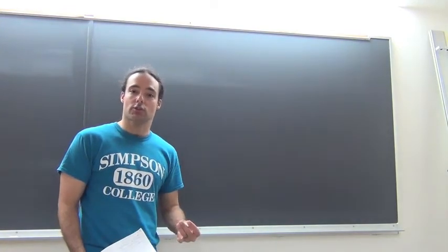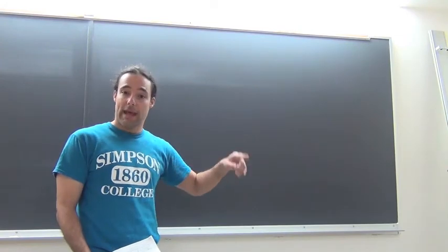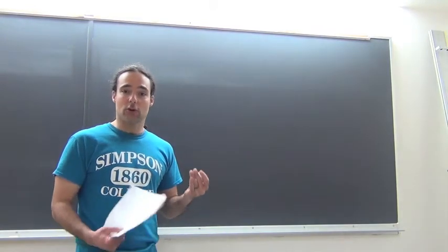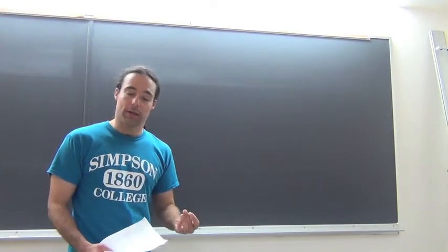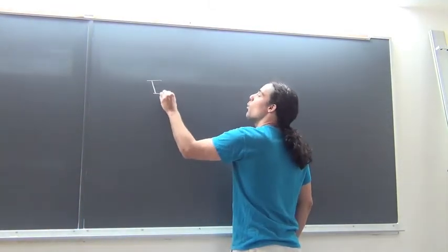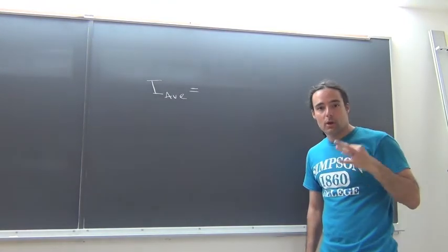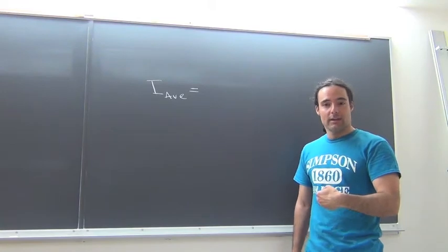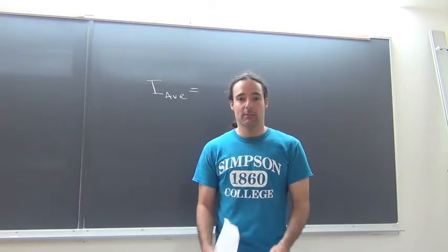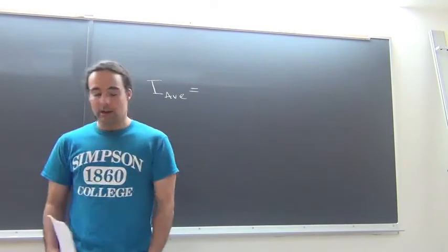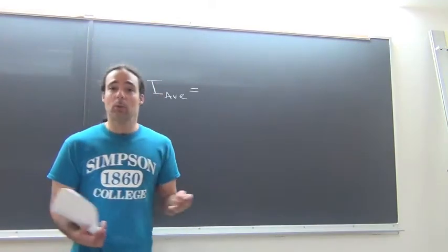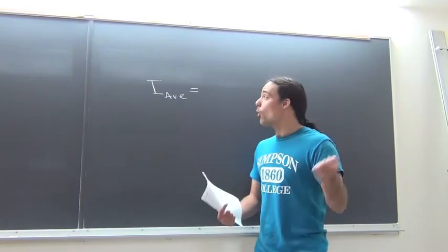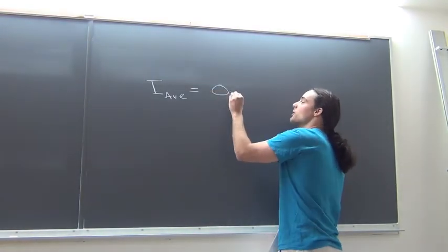Let's first look at what the charges are doing. We already know the current is going up and down, which means the charges are moving one way and then another. So we might want to ask: on average, what are the charges doing? What's the average current? Well, if half the time it's moving to the left and half the time it's moving to the right, then on average it's not going anywhere. So on average, the net movement of the charge is going to be zero amps. The average value of the current is not particularly useful for us to look at.